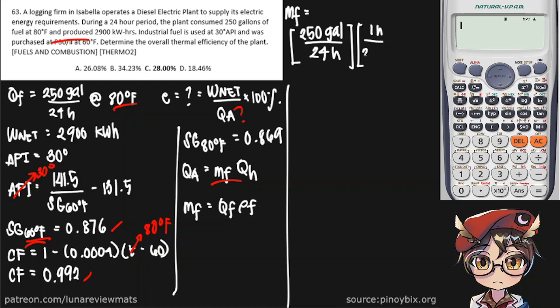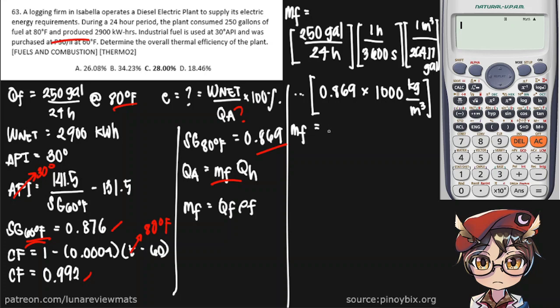And 1 cubic meter is equal to 264.17 gallons. And then we multiply that by the density of our fuel by simply multiplying our SG: 0.869 times 1,000 kilograms per cubic meter. And we do get a mass flow rate of 0.00952 cubic meters per second.